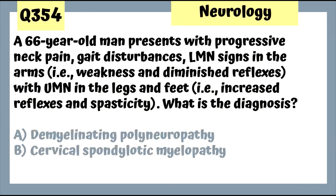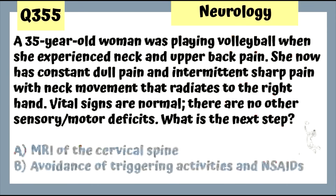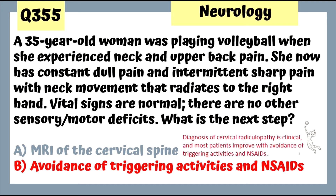Question 354: A 66-year-old man with progressive neck pain, gait disturbances, lower motor neuron signs in the arms and upper motor neuron signs in the legs and feet — this is cervical spondylotic myelopathy, associated with spinal canal narrowing. Question 355: A 35-year-old woman with neck and upper back pain after volleyball, with constant dull and intermittent sharp pain radiating to the right hand — avoid triggering activities and use NSAIDs; this is cervical radiculopathy, a clinical diagnosis.